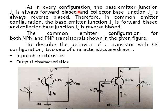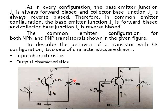As in every configuration, the Base-Emitter Junction is forward biased and the Collector-Base Junction is reverse biased. The Common Emitter Configuration for both NPN and PNP transistors is shown in the given figure. For NPN, the Emitter is N-type which is negative and the Base type is positive — this gives forward bias. The Collector is N-type which is positive and Emitter is negative.